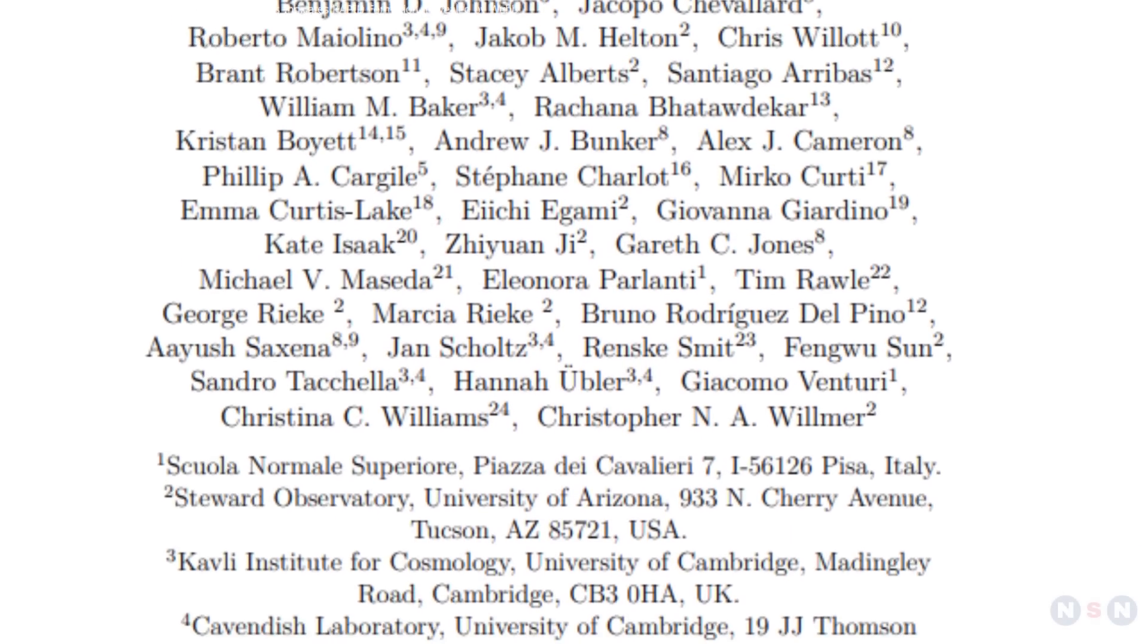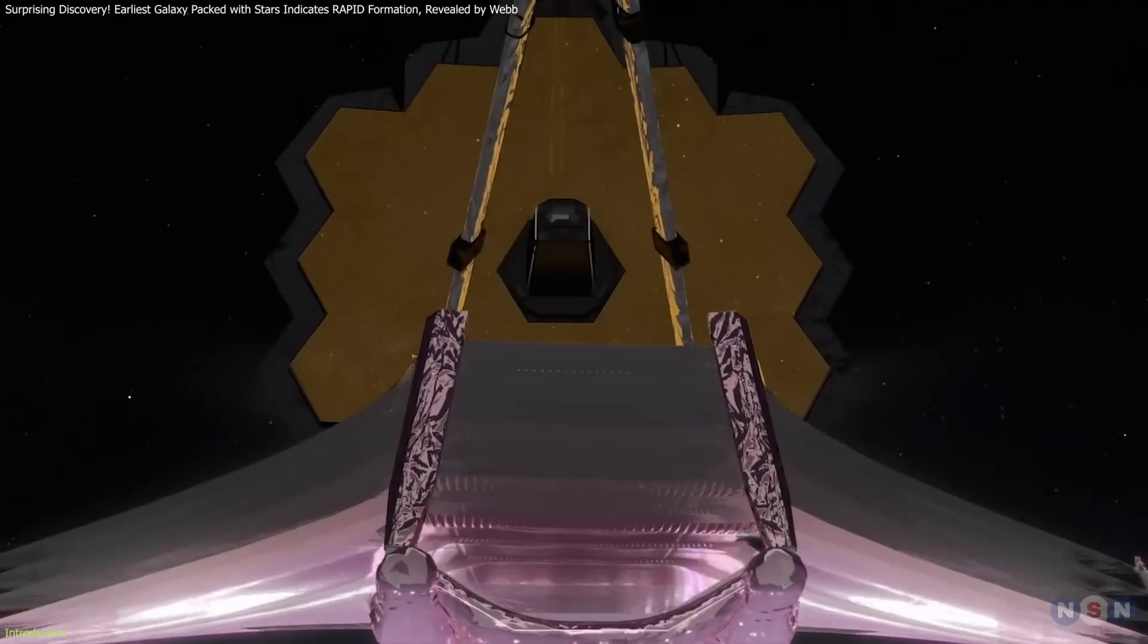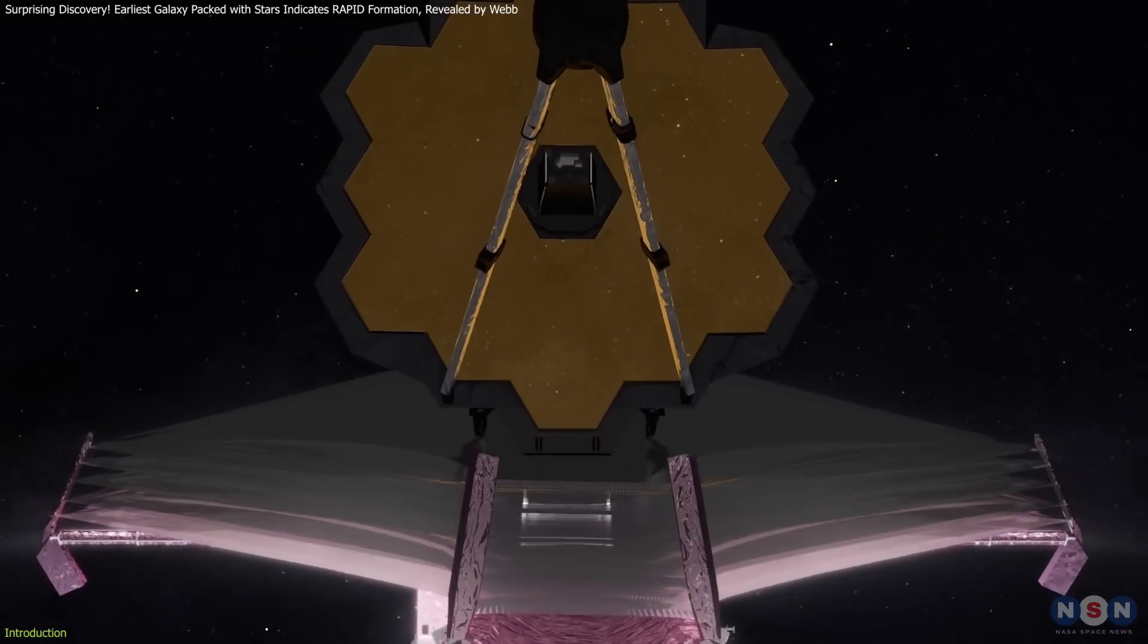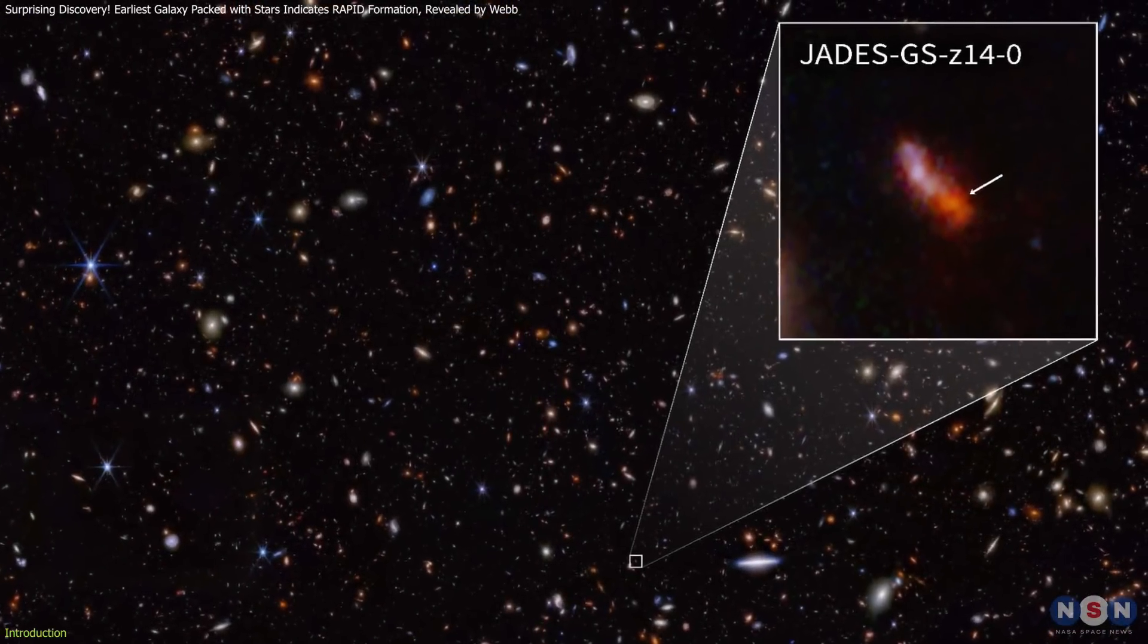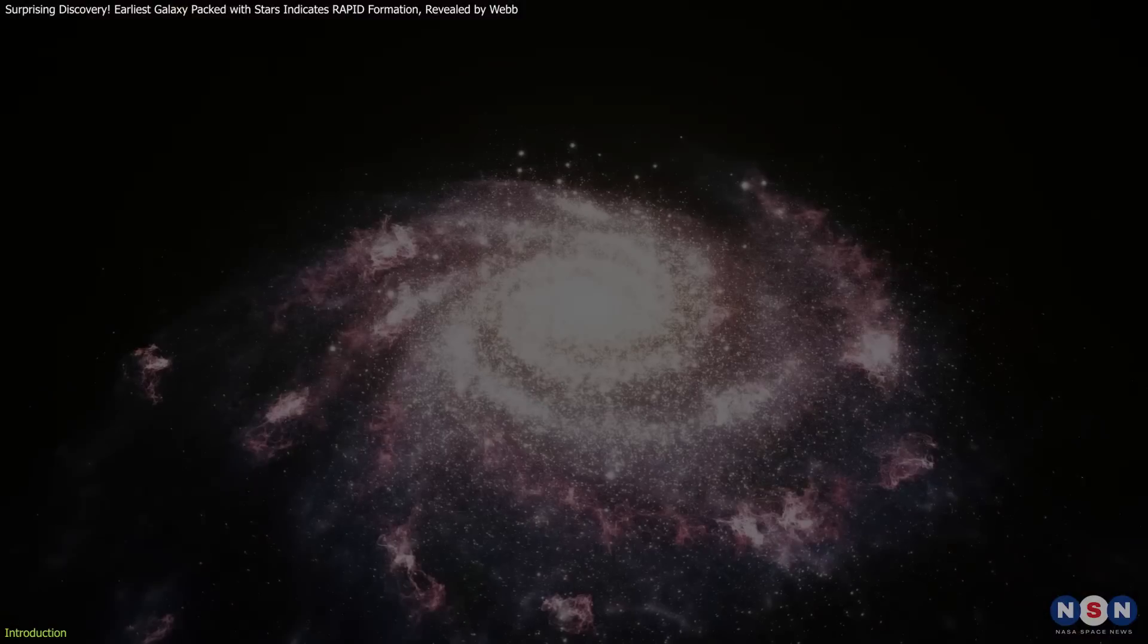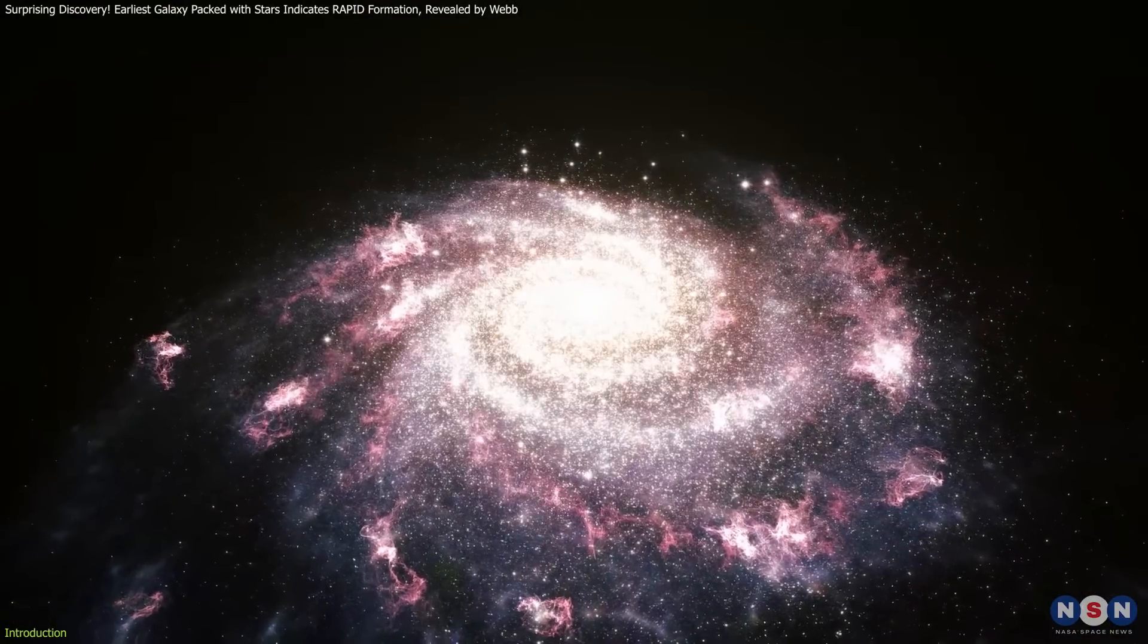An international team of astronomers and astrophysicists analyzing data from the James Webb Space Telescope has discovered that the light from one of the earliest known galaxies is due to ongoing bursts of star formation.